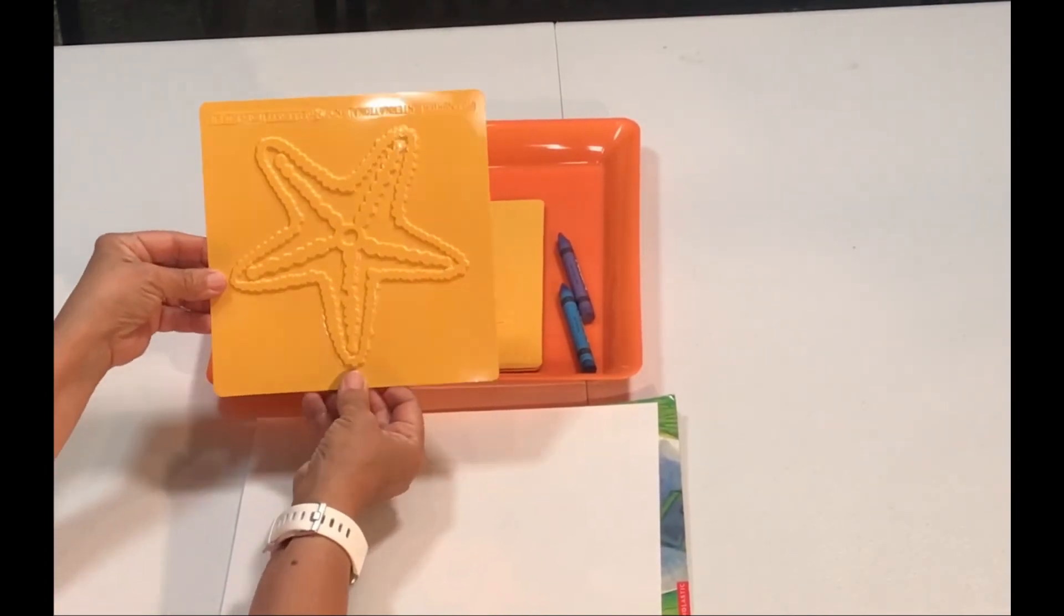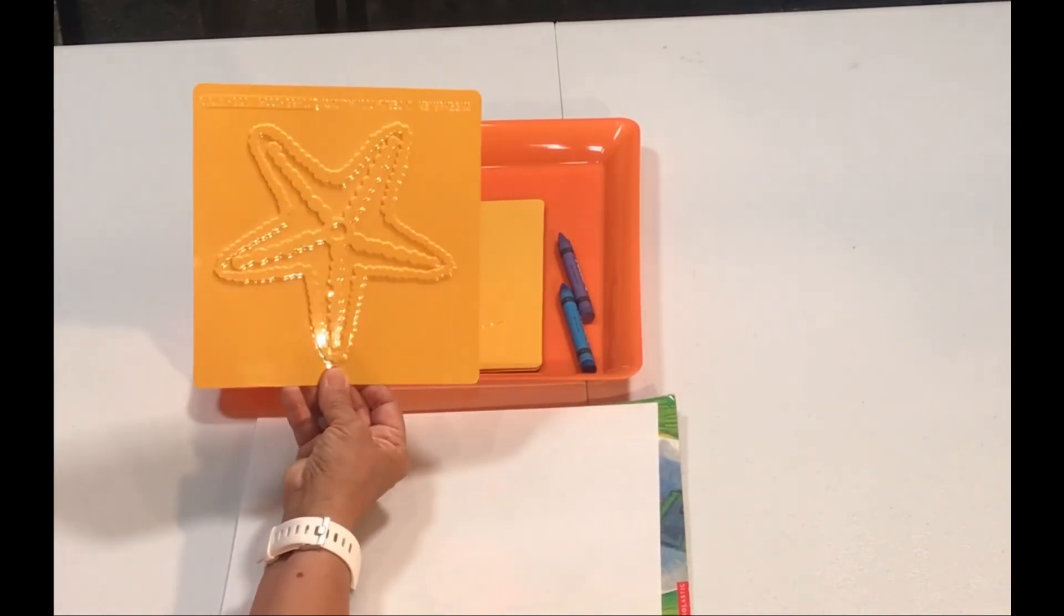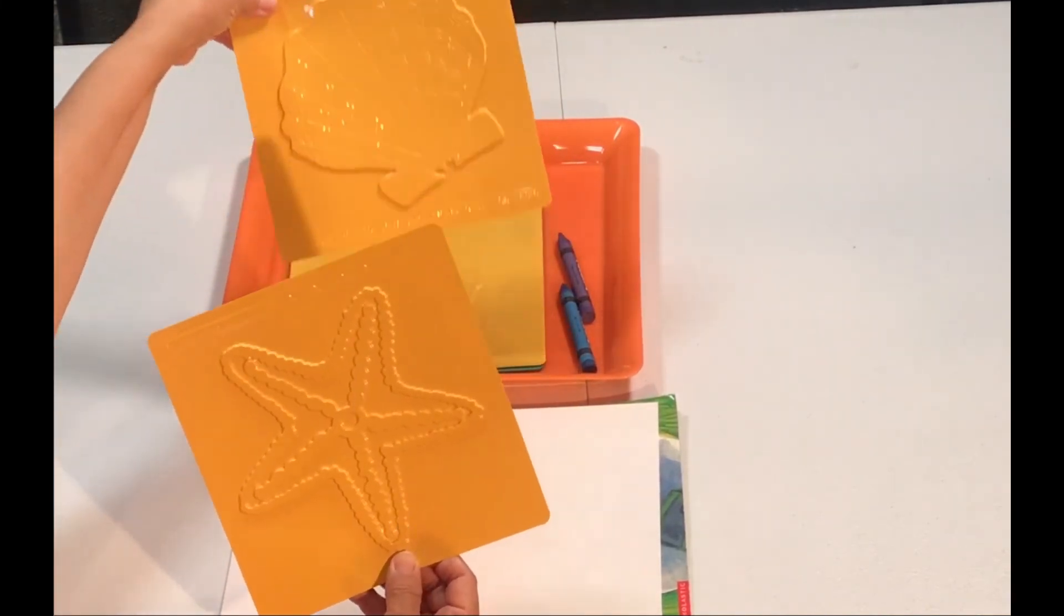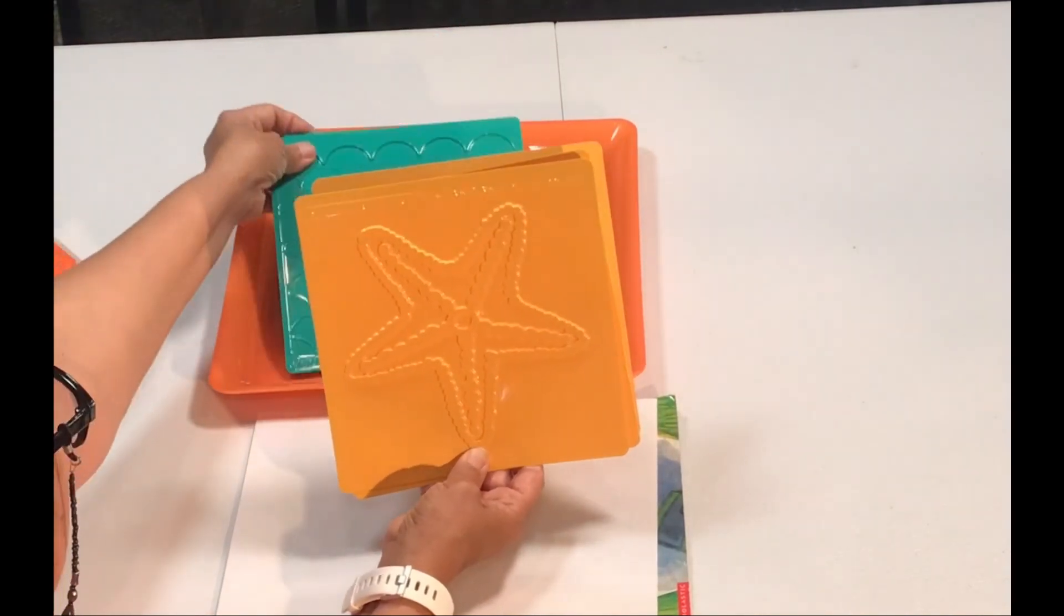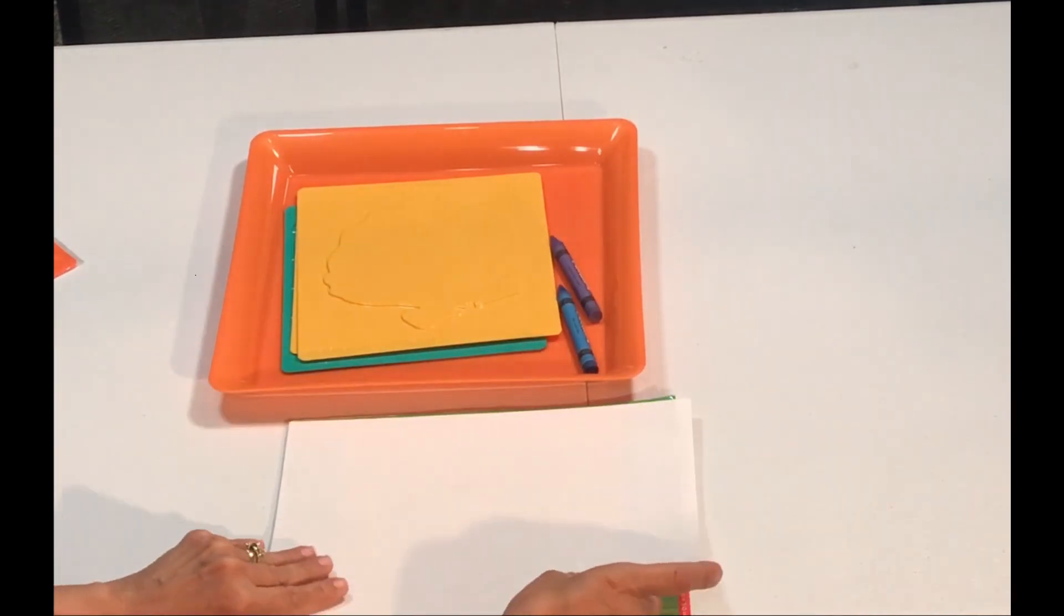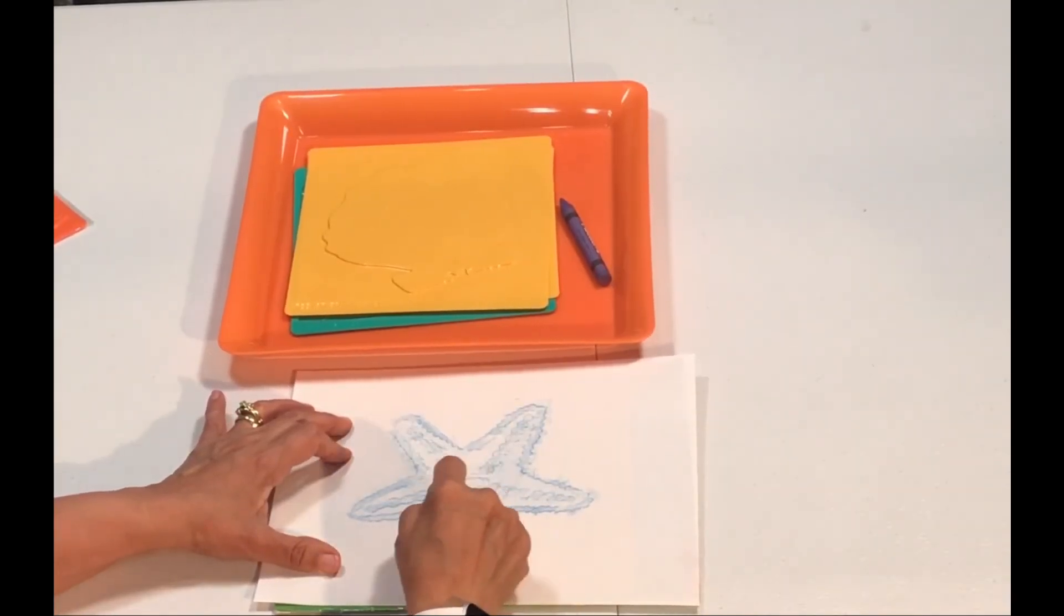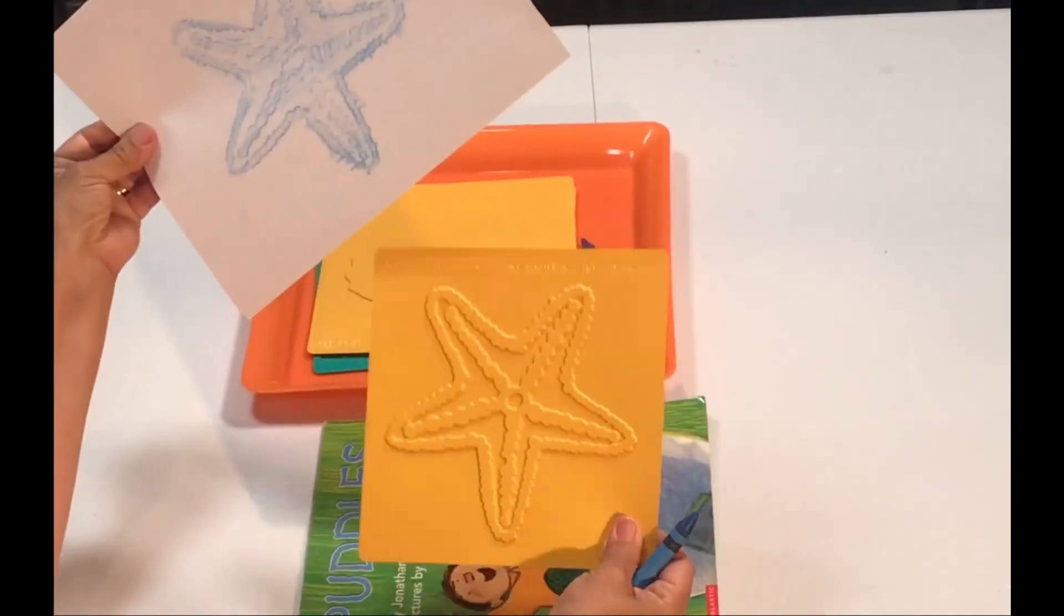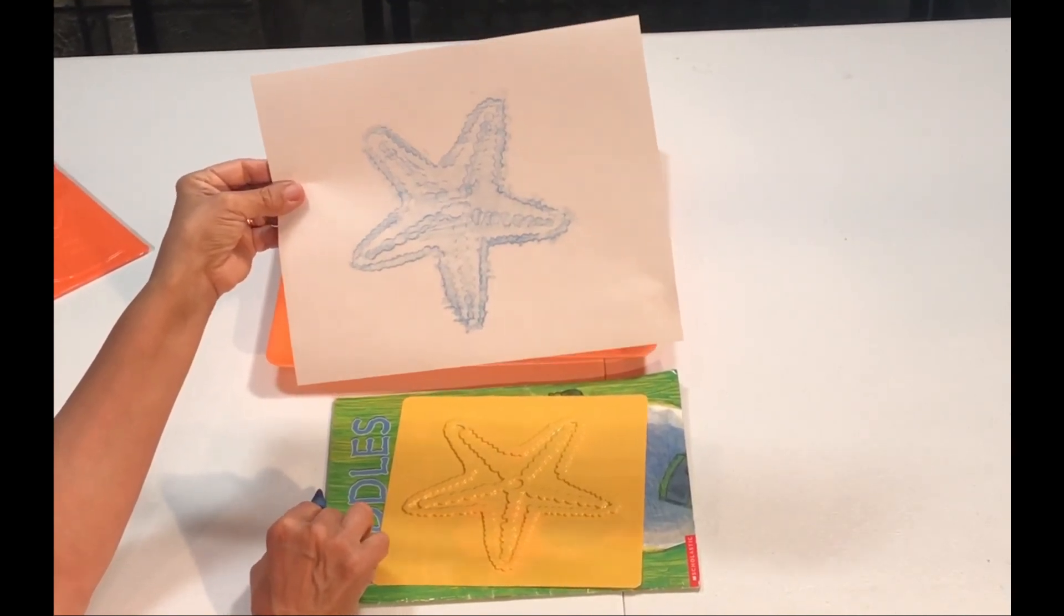For this activity, I am going to be using some of these rubbing plates. I got these at Dollar Tree and they come in a package of three. This one has a starfish, some shells, some seashells, and also waves. So today we're going to work on this starfish. We're going to get a crayon and we're just going to rub. This is a perfect activity as the children get to see that when they rub the crayon they get the picture over here. You can use your broken crayons that they refuse to color with.